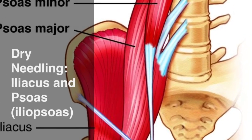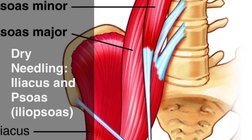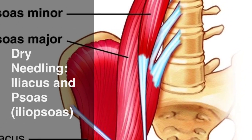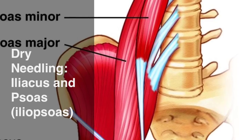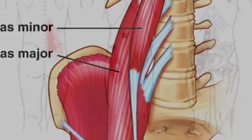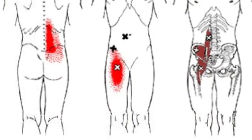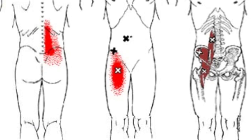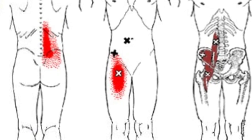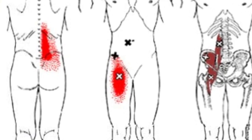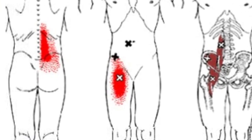This video looks at the dry needling techniques for the iliacus and psoas muscles, collectively known as the iliopsoas. Ipsilaterally, the pain from these trigger points may refer posteriorly to the lumbar region or anteriorly to the upper part of the thigh.